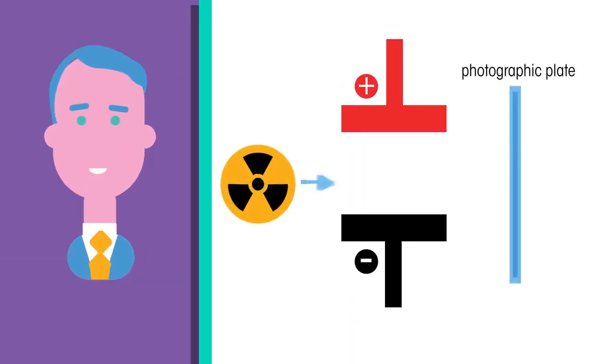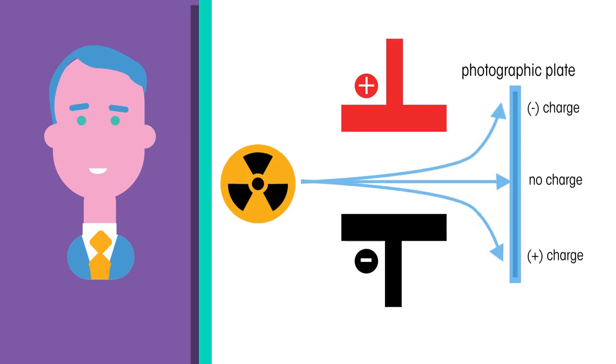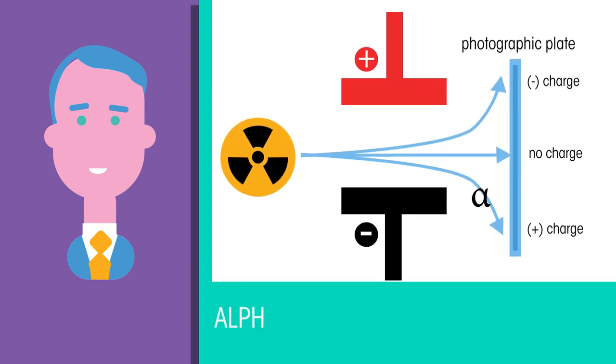Rutherford identified three types of radiation, two of which were deflected in an electric or magnetic field. These were identified and named as alpha, beta, and gamma radiation.